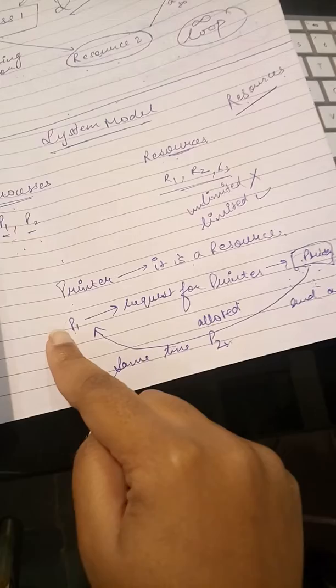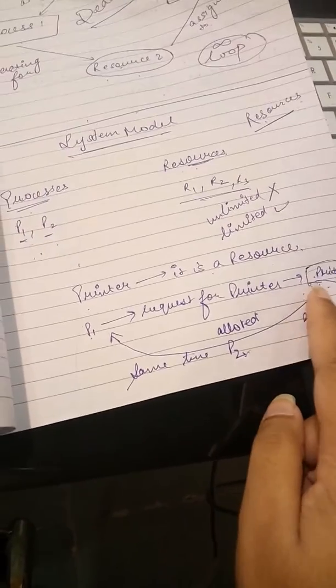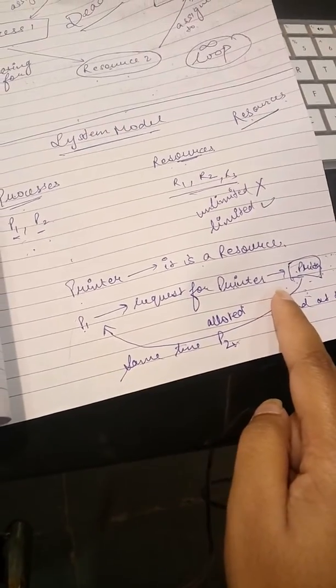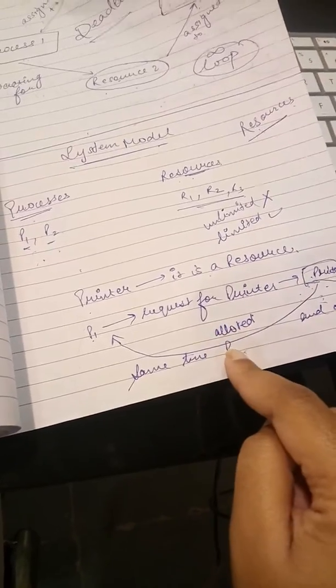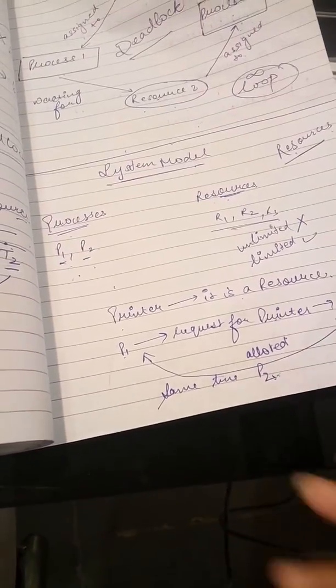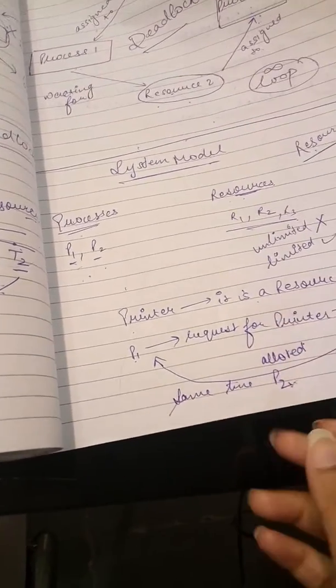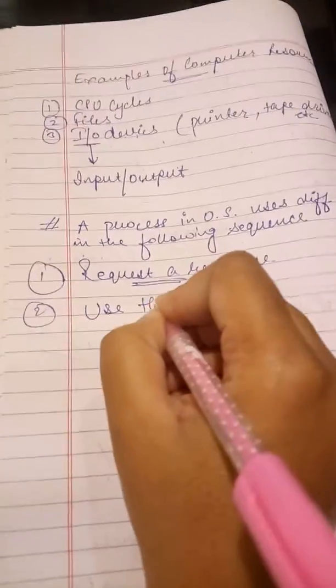As we saw in the previous example of our printer, the P1 process requested for printer, the printer was available so it was allotted to process P1. And then P2 process requested for printer but at this time it is already with process P1 and printer is not available as a resource for P2. So what happens here is the P2 goes into a waiting state and it will be waiting till P1 has freed the printer.